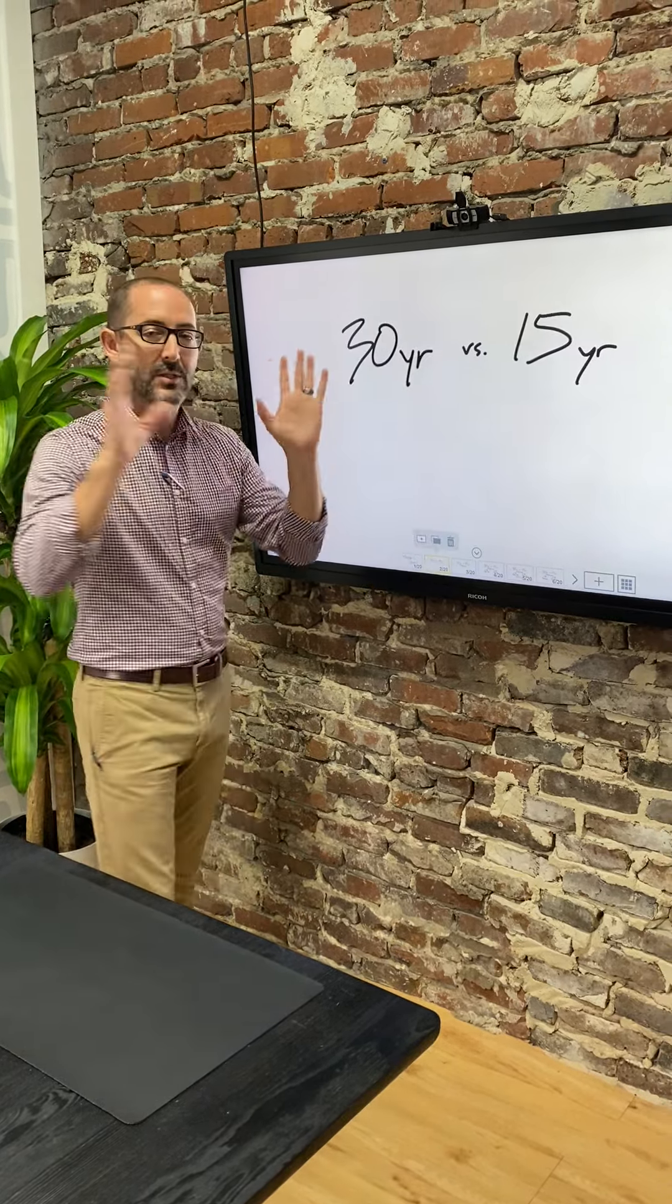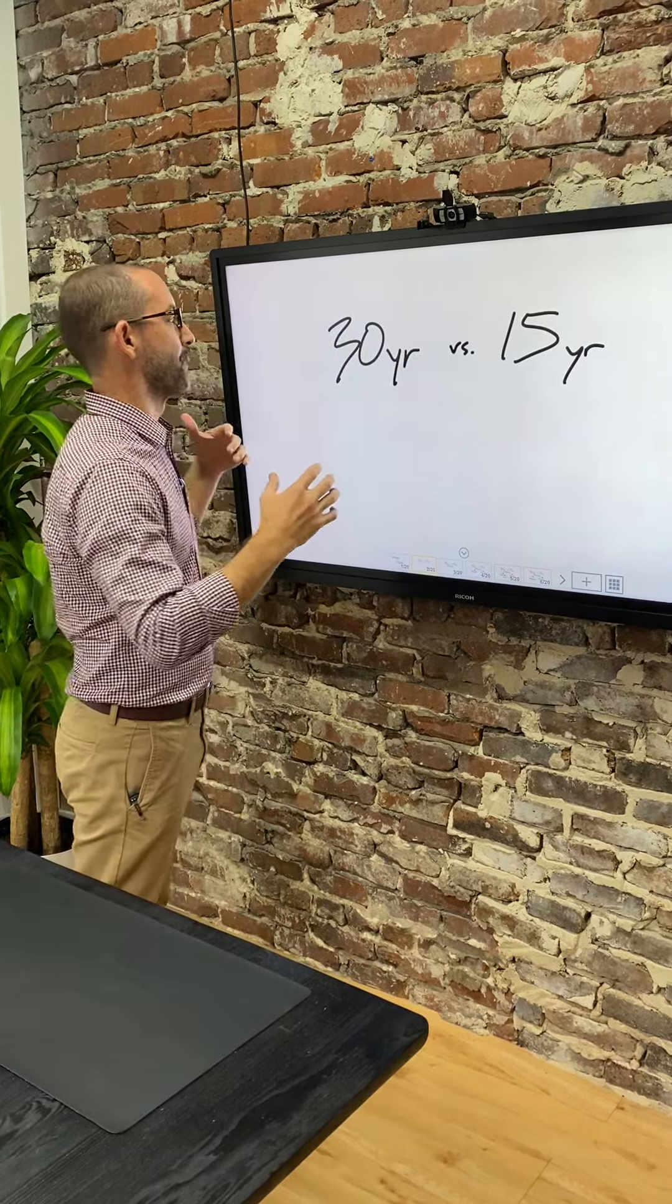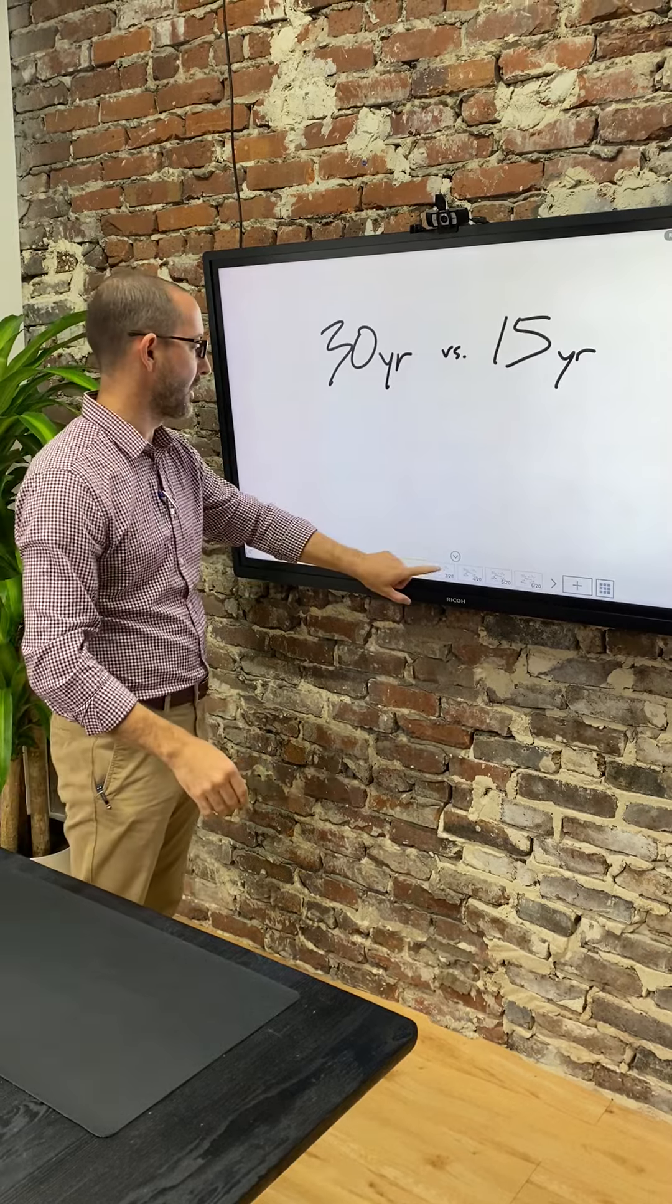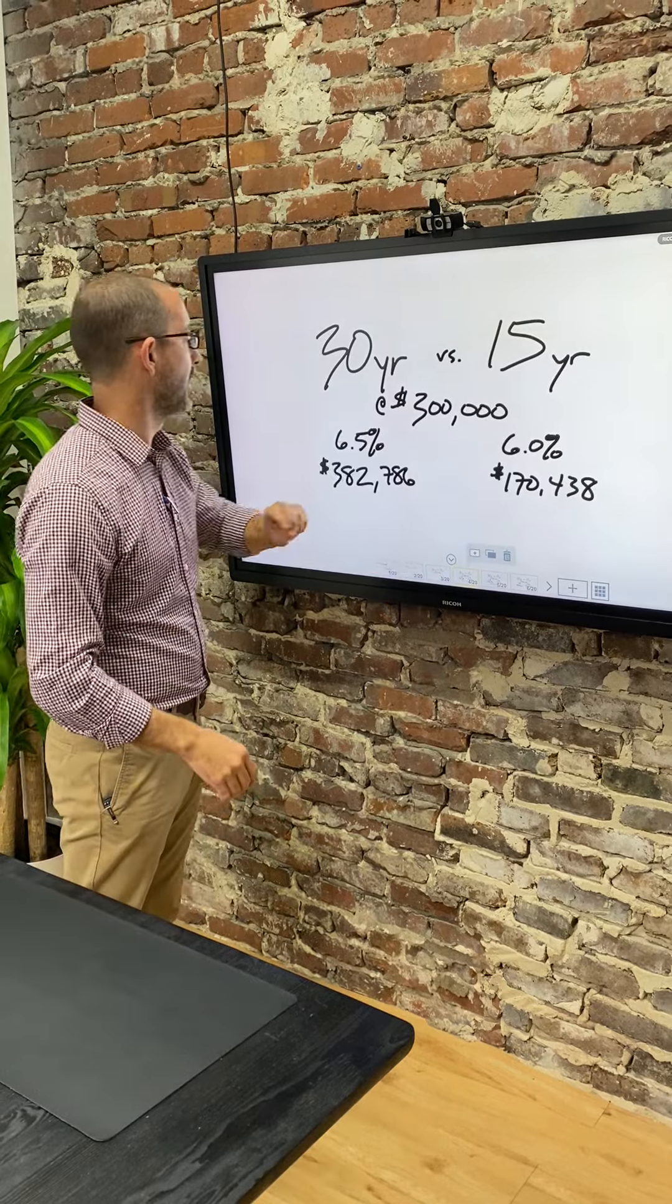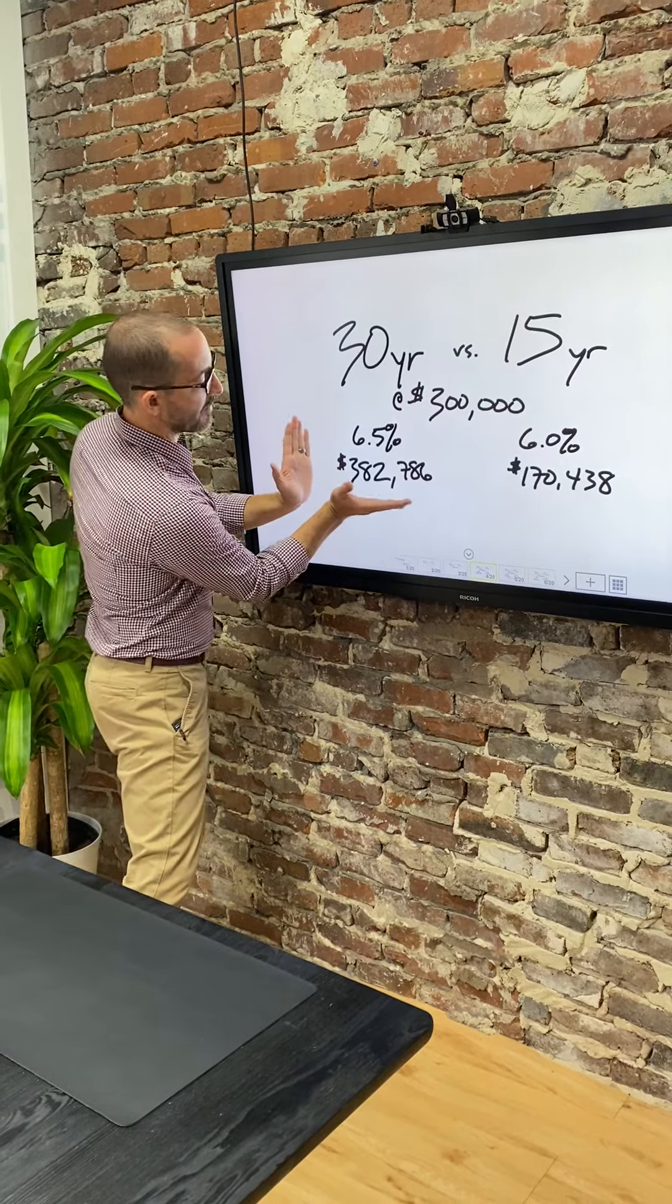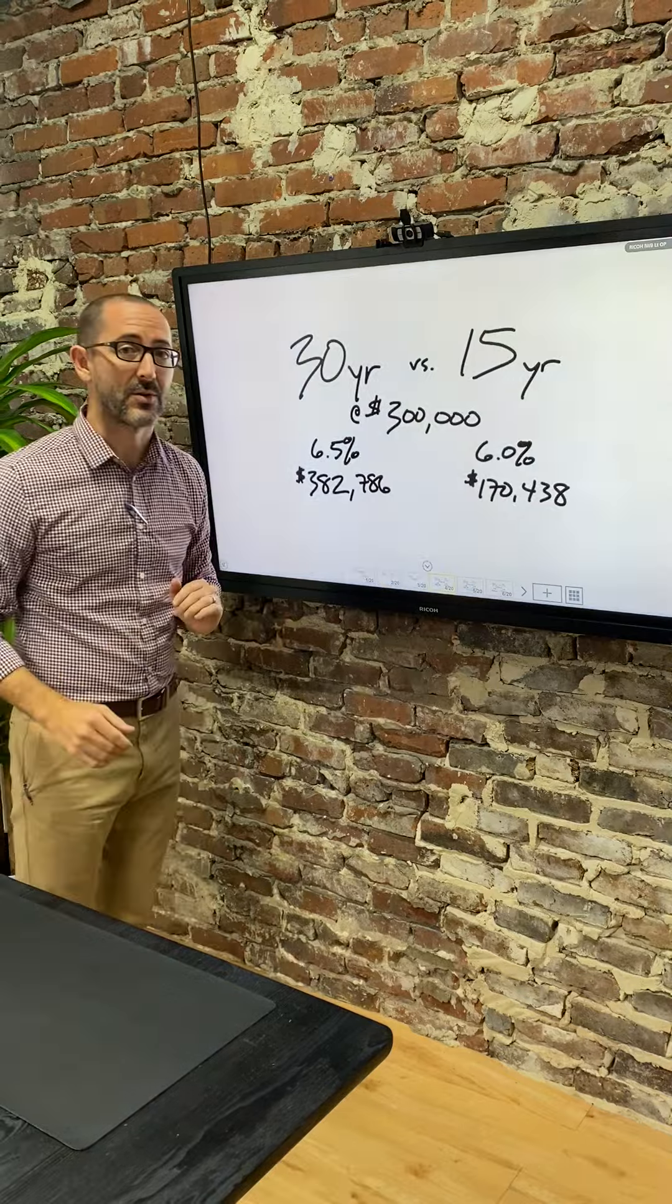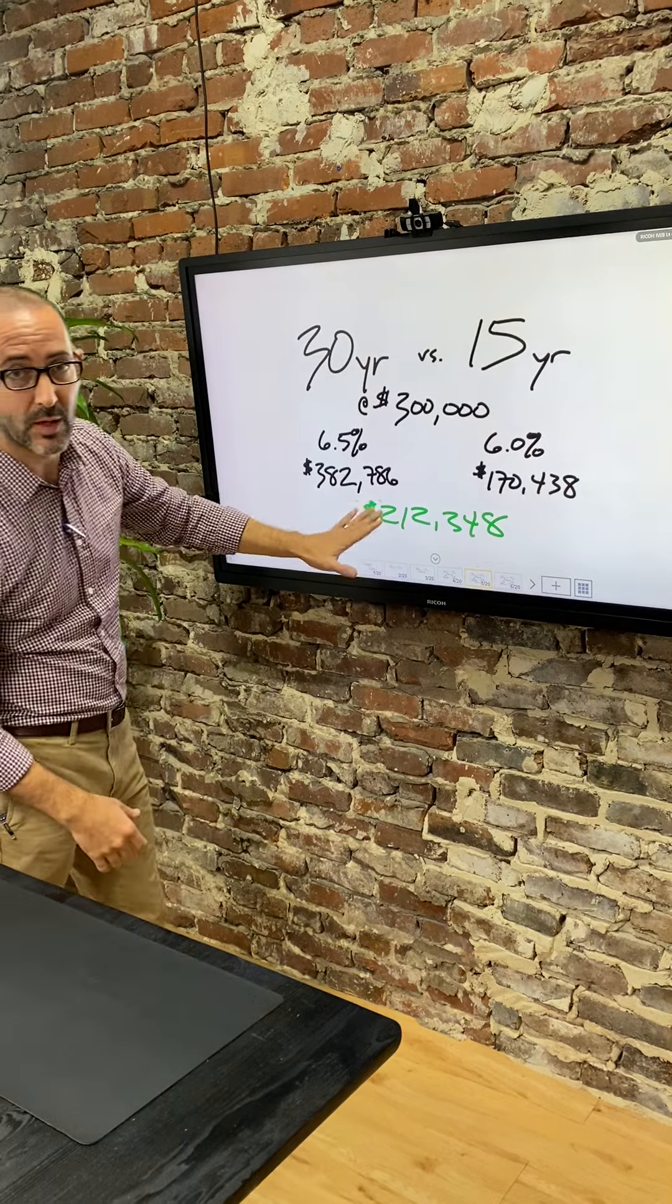So number one, the first mortgage hack is taking your 30-year mortgage down to a 15-year mortgage. It's very simple to do and basically what it does is it makes sure that you're paying less interest at the end. You pay off the house sooner. So we're gonna talk about a $300,000 loan. A 30-year rate right now, roughly, is around 6.5% which means this is the amount of interest you'll pay over 30 years, $382,000 versus a 15-year, you get a little bit better rate, you're only paying $170,000. Which means in the end you're saving $212,000.